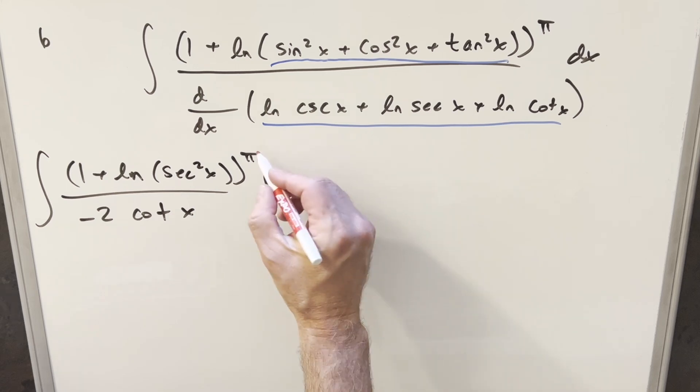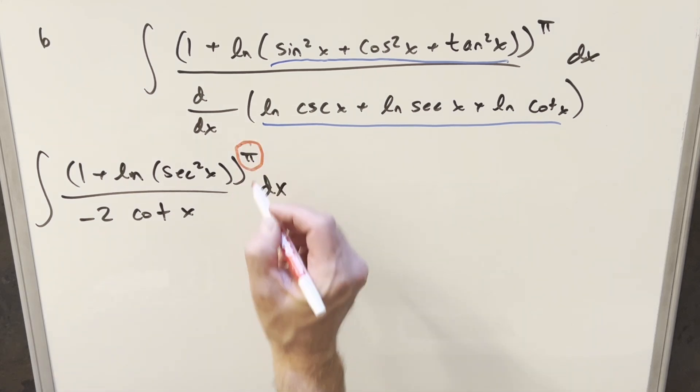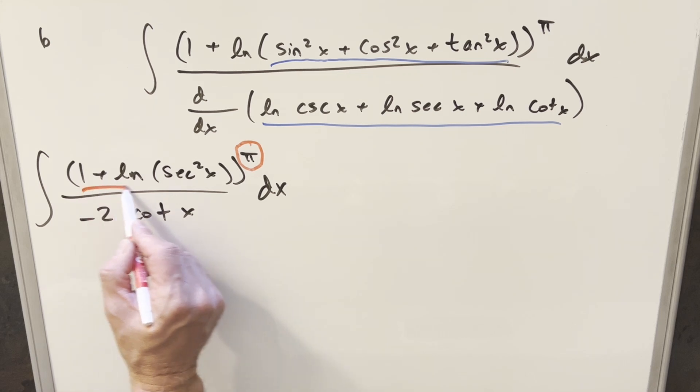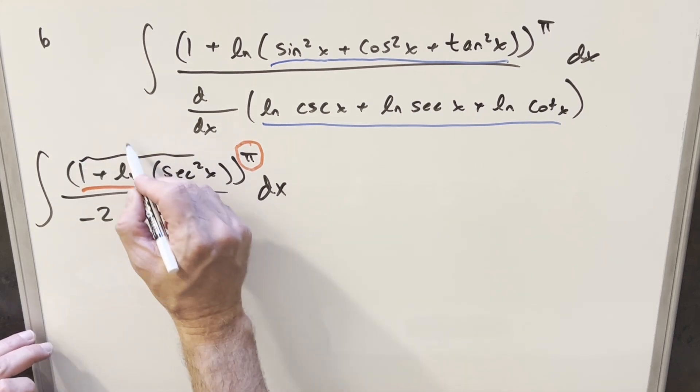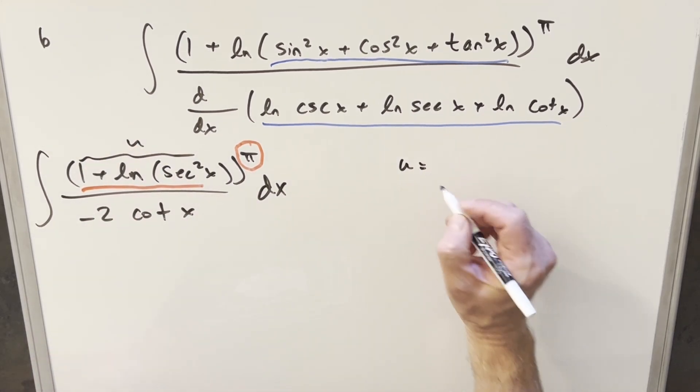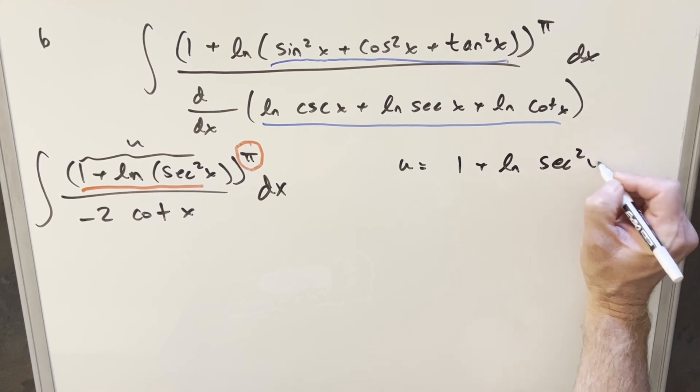But now at this point, the trouble I have is, in the numerator, the exponent's pi. So it's really making me think that I need to clean this up, or else how am I going to have some complicated expression raised to pi. So what I can do is make a u substitution for all this here and see what happens. So we'll say u equals 1 plus natural log secant squared x.